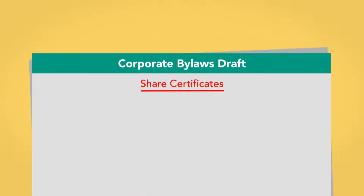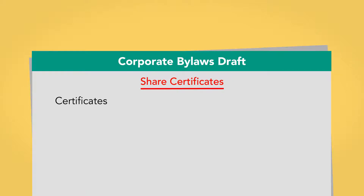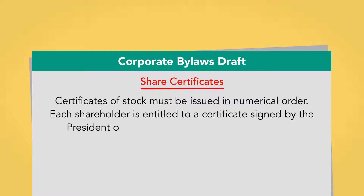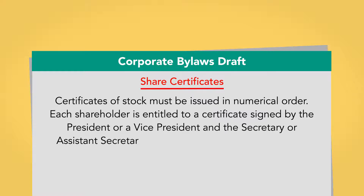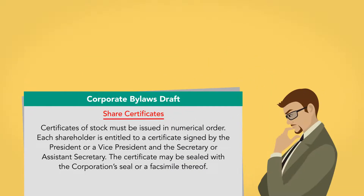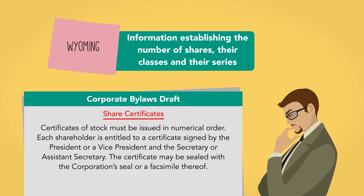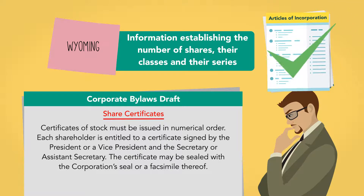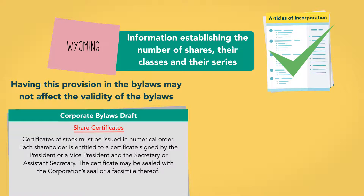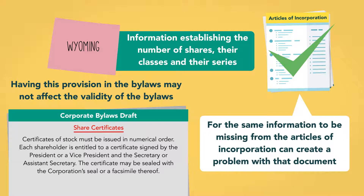Consider the following generic bylaw section for share certificates: "Certificates of stock must be issued in numerical order. Each shareholder is entitled to a certificate signed by the president or a vice president and the secretary or assistant secretary. The certificate may be sealed with the corporation's seal or a facsimile thereof." There's nothing wrong with this provision as written, but Wyoming law makes it plain that information establishing the number of shares, their classes, and their series must appear in the articles of incorporation and not the bylaws. Having this provision in the bylaws may not affect the validity of the bylaws, but for the same information to be missing from the articles of incorporation can create a problem with that document.